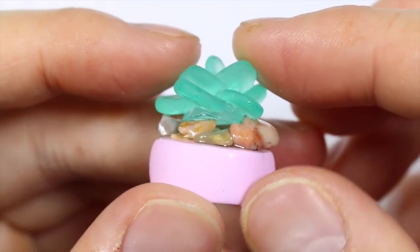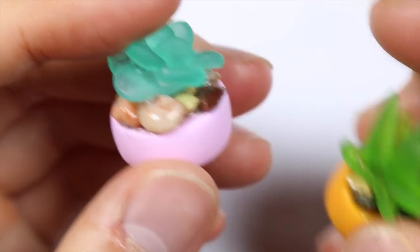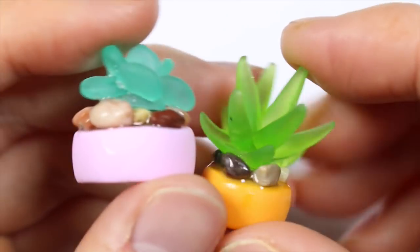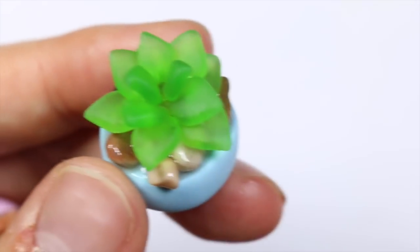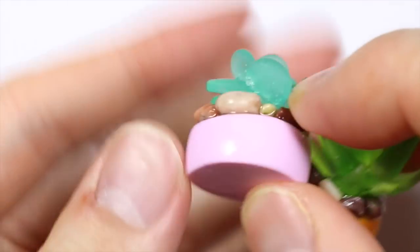And once fully cured, you should have four succulents that look like this, and I really like the frosted look because it reminds me of actual succulents, but then you could also give it a layer of glaze to give it that nice, shiny, glossy, glassy look that everyone likes.